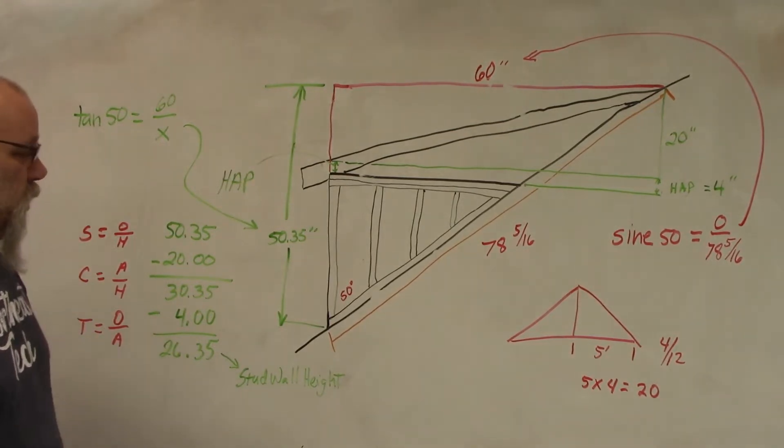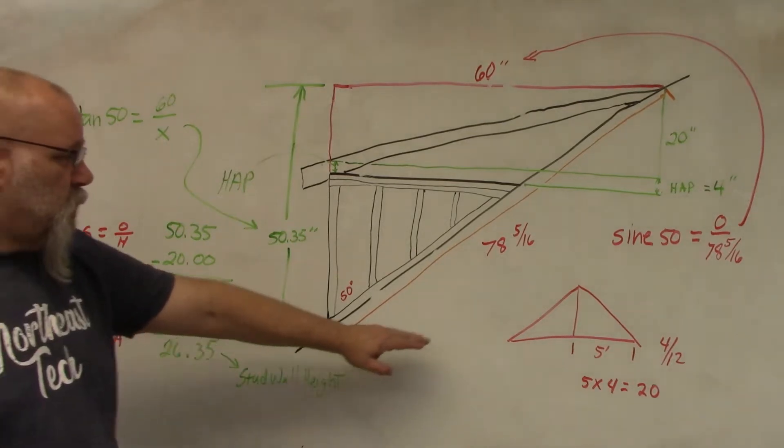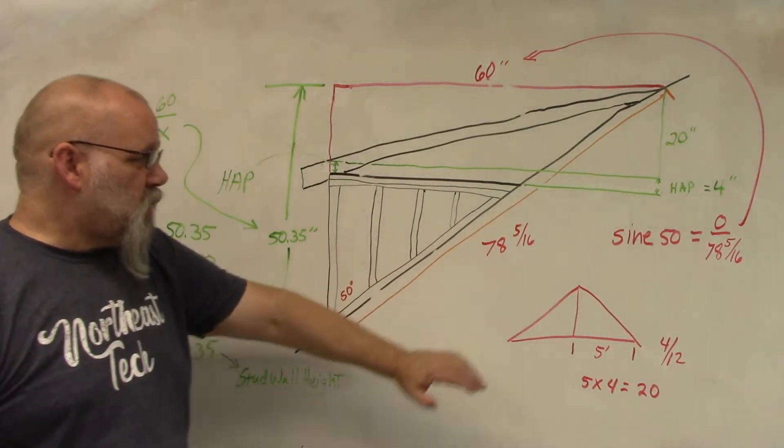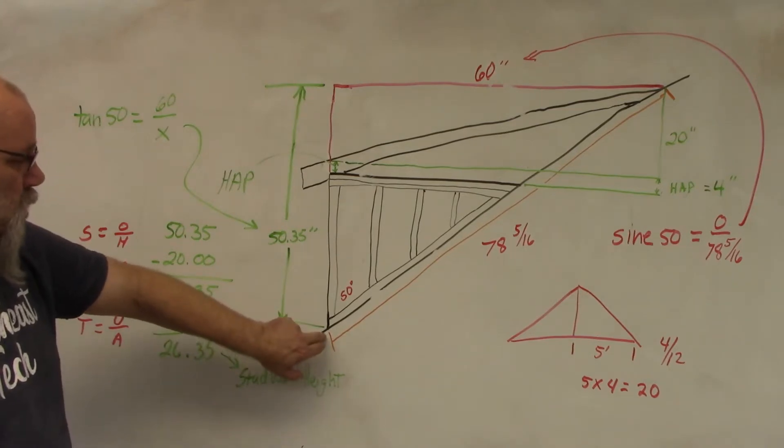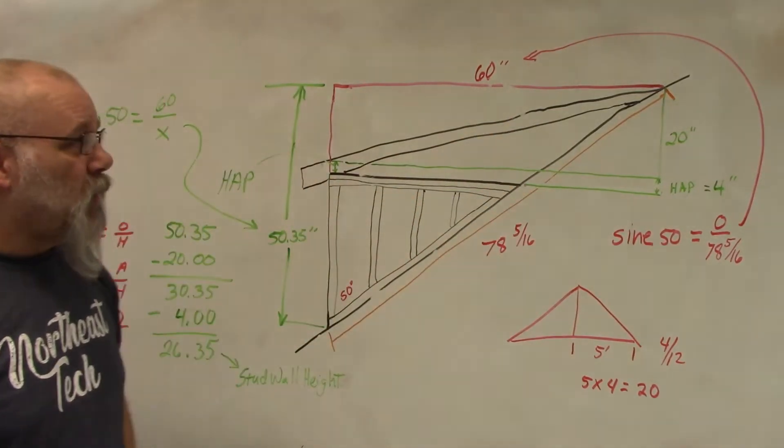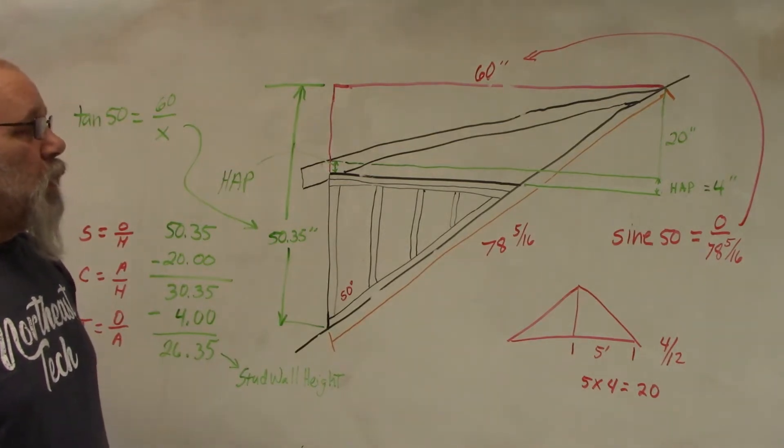So to begin with, this measurement right here, this 78 5/16, that's the measured distance from where you want the bottom of your shed dormer to the top where the rafter is going to go.